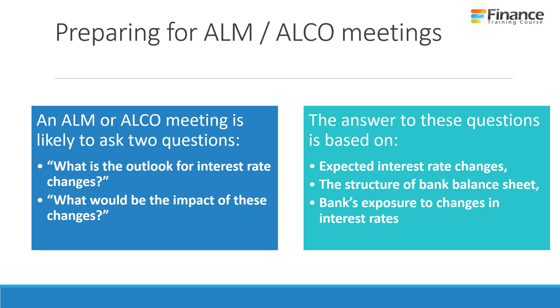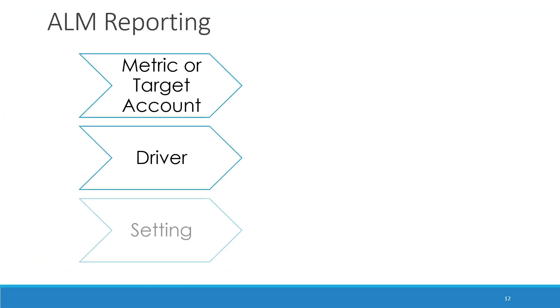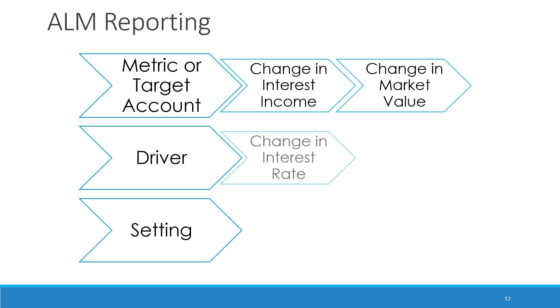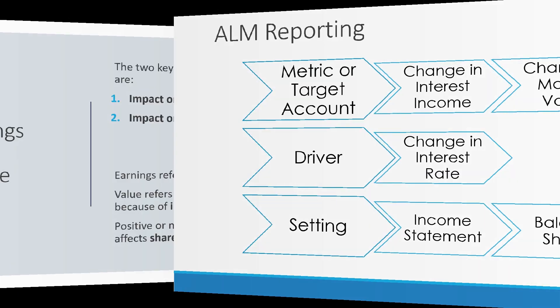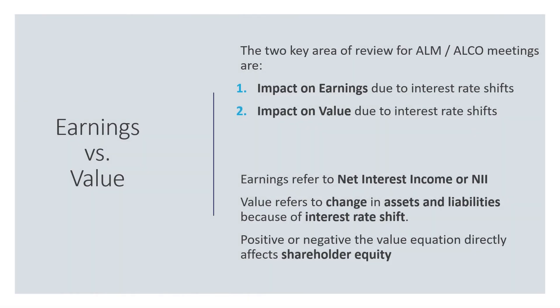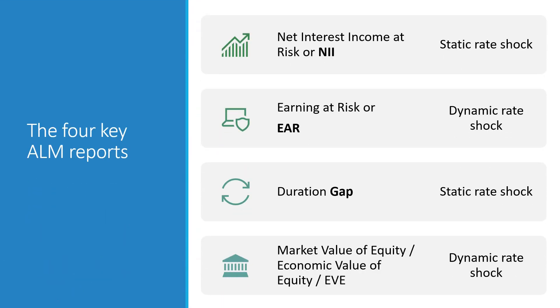Preparing for ALM and ALCO meetings: an ALM or ALCO meeting is likely to ask questions such as — what is the outlook for interest rate changes, and what would be the impact of these changes on our bank's balance sheet? The answers depend on expected interest rate change and the structure of the bank balance sheet. The primary question an ALCO committee is trying to answer is essentially earnings versus value: impacts on earnings due to interest rate shifts, and impact on value due to interest rate shifts.